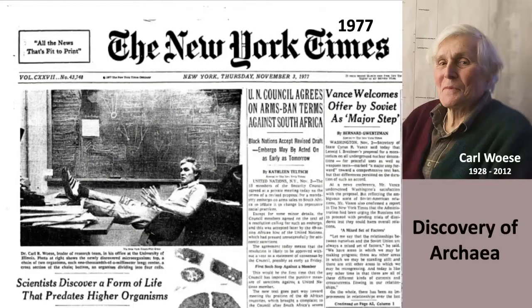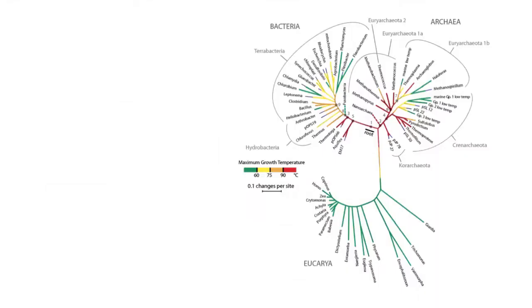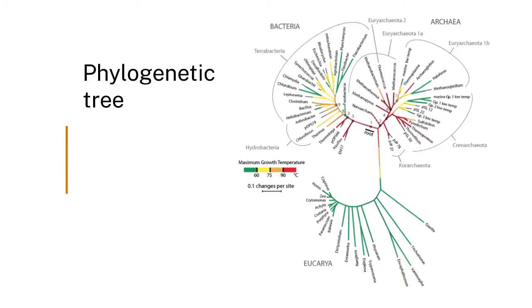In what environments is life believed to have emerged? There are several ways to get at this question. One way is to look at phylogenetic trees. Carl Woese discovered the archaea in 1997, and with this technique of genetic sequencing you can make trees in which the LUCA — the Last Universal Common Ancestor — is identified.